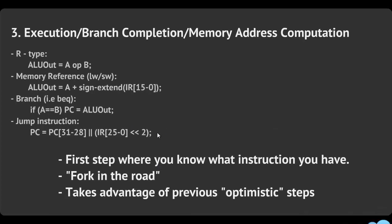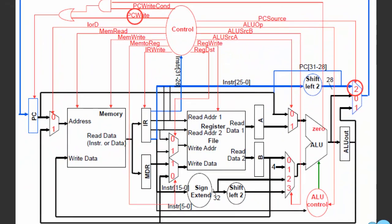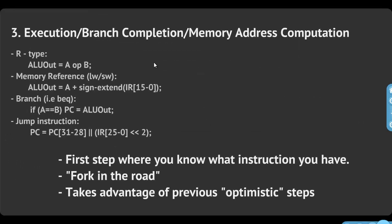For the jump instruction, you simply replace your PC with the jump address. You can see the jump address comes in through the datapath and you set PC source to 2, routing it all the way back to PC.